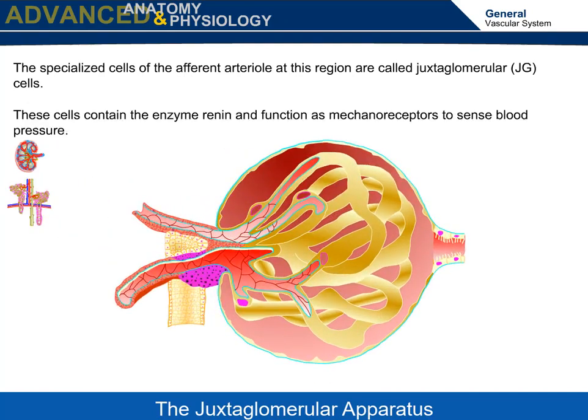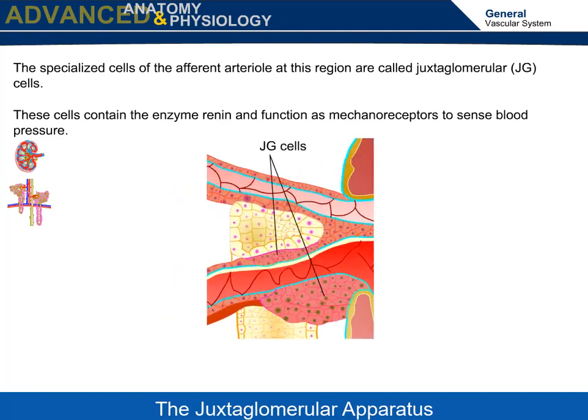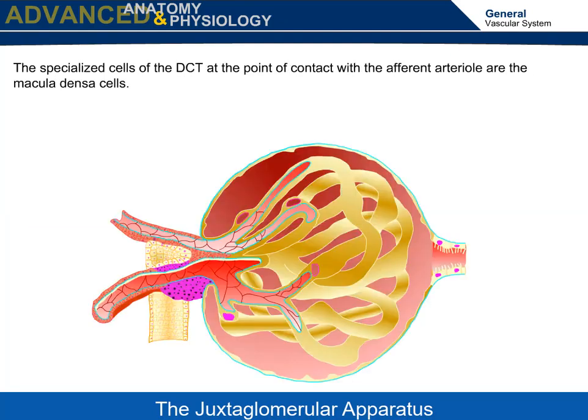These cells contain the enzyme renin and function as mechanoreceptors to sense blood pressure. Let's zoom in to see the JG cells up close. The specialized cells of the DCT at the point of contact with the afferent arteriole are the macula densa cells.